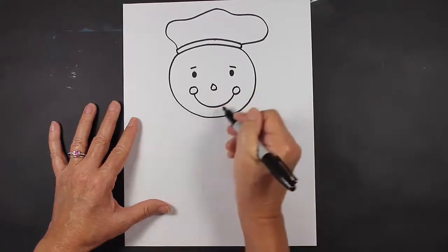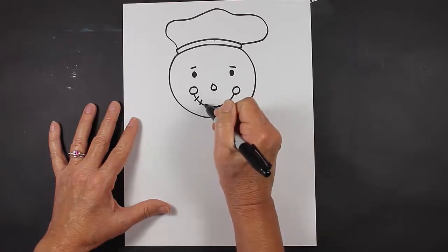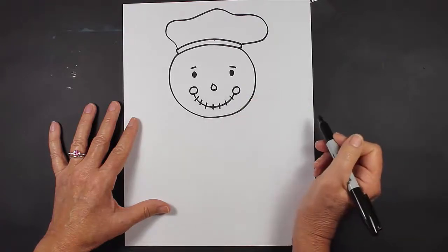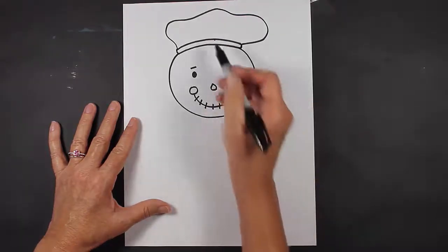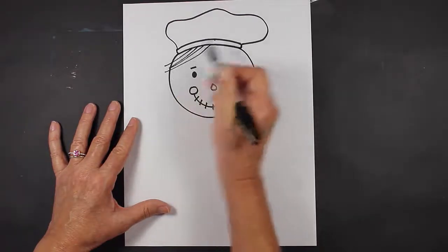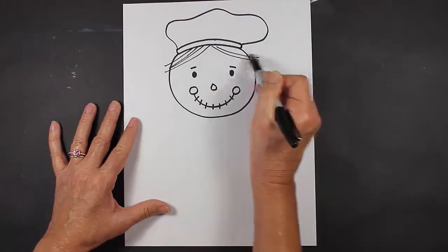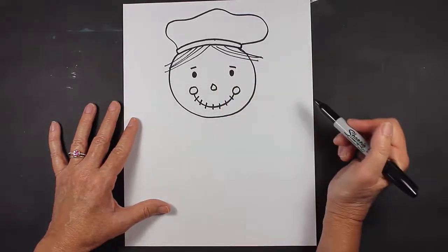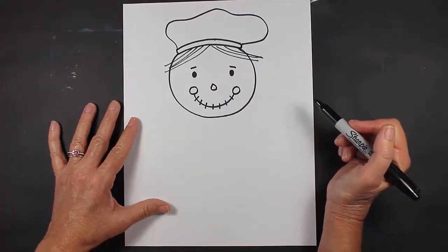Through this curved line, let's make some stitch marks, some little lines. Then let's give our scarecrow a little bit of hair. If you can think of a way that you like to make hair, go ahead and do that. I'm just going to make some curved lines coming out from the bottom of his hat.